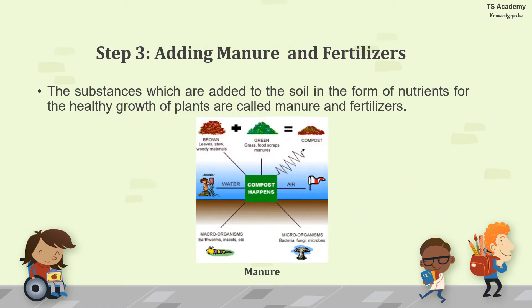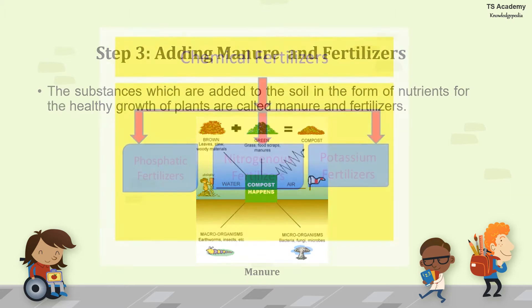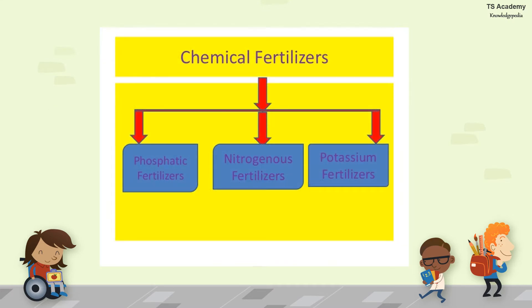The third step is adding manure and fertilizer. The substances added to the soil in the form of nutrients for the healthy growth of plants are called manure and fertilizers. Manures are basically natural minerals added to the soil, prepared through compost. Fertilizers are chemical-based — they include phosphatic, nitrogenous, and potassium-based fertilizers.